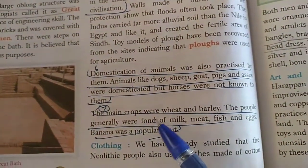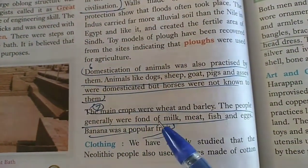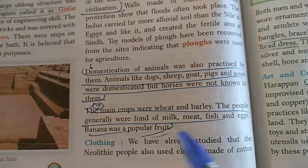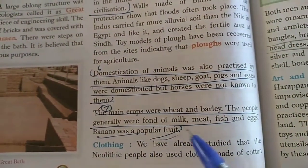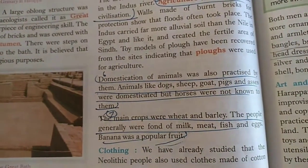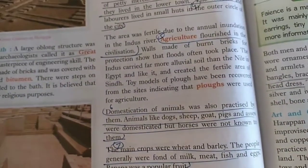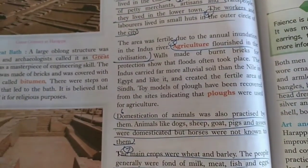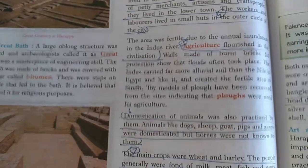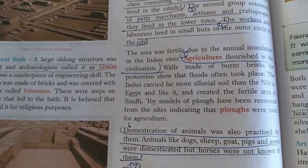Seventh point: the main crops were wheat and barley. The people were generally fond of milk, meat, fish, and eggs, and banana was a popular fruit. So all these questions you have to do in your notebook, neat and clean.